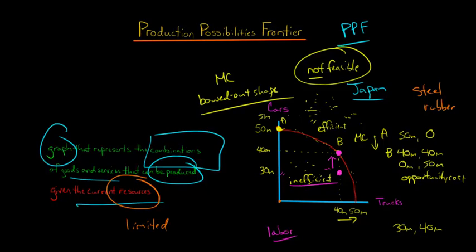Over time, economies can try to expand the PPF outward. For example, if there was a new technology that made it easier to make trucks, the curve might expand outward — maybe instead of a max of 50 million trucks, it becomes 80 million. Technology can shift the frontier. Also, when we engage in trade, that allows us to consume at a point that's outside what's currently feasible.